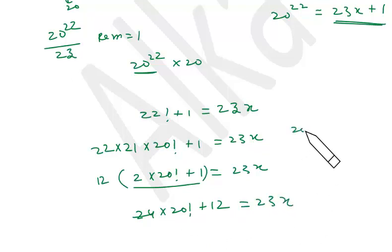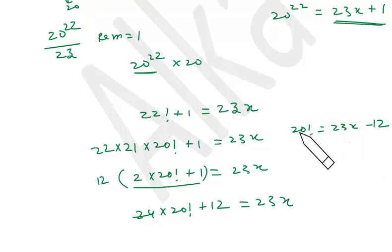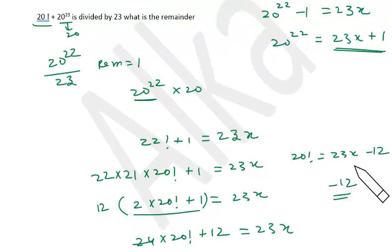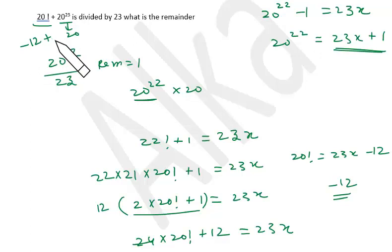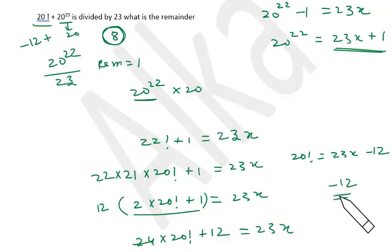Taking out 23 from 24, we get 1 into 20 factorial plus 12, which is a multiple of 23. So 20 factorial equals 23x minus 12. When 20 factorial is divided by 23, the remainder is minus 12. We have remainder minus 12 from Wilson's theorem and remainder 20 from Fermat's theorem. The final remainder is minus 12 plus 20, which is 8.